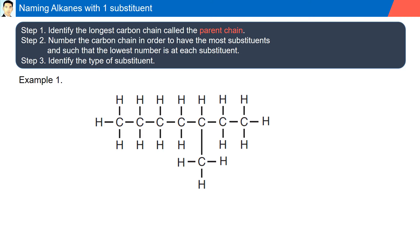In this example, let's explore the longest carbon-carbon chain. Option one gives us six carbons, or option two gives us seven carbons. Therefore, we're going to use this parent chain as our longest parent chain.